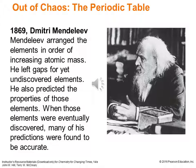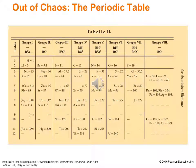Mendeleev was even bright enough to see that he needed to leave gaps for undiscovered elements. We had discovered elements out of order, and he knew based on properties that some were missing. He could predict a lot of the properties of those elements with really good predictive power — very close, if not right on, for most predictions. We see here an early periodic table — likely a German arrangement — with horizontal rows and vertical groups arranged by similar chemical affinity and behavior.